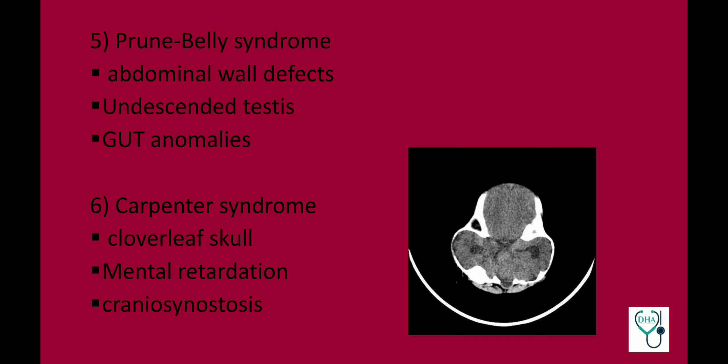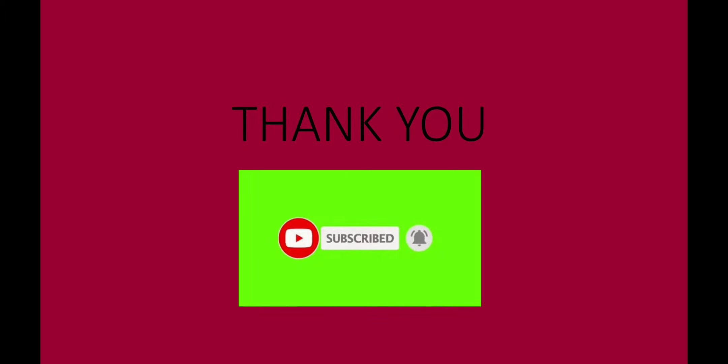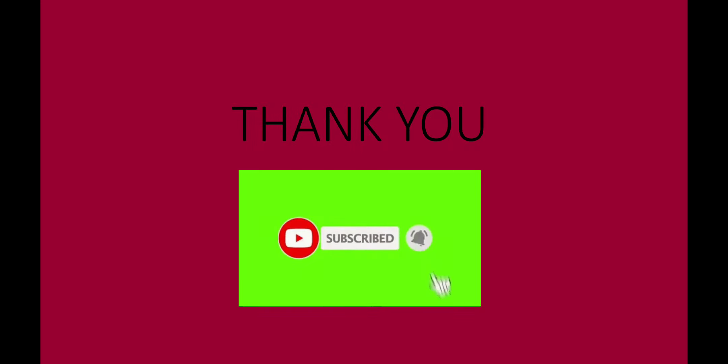Prune belly syndrome involves abdominal wall defects, undescended testes, and genitourinary tract anomalies. Carpenter syndrome: the patient will have cloverleaf skull with mental retardation and craniosynostosis — this is an image-based question showing cloverleaf skull and craniosynostosis. Thank you everyone — I have covered 100 high-yield important points from paediatrics for NEET, PGI, and AIIMS, along with six important syndromes which are frequently asked. Please like, share, and subscribe to the channel for more such content.